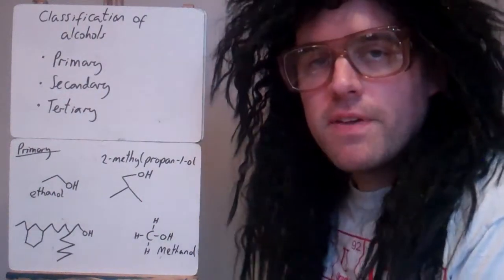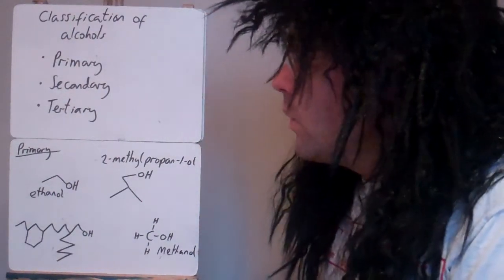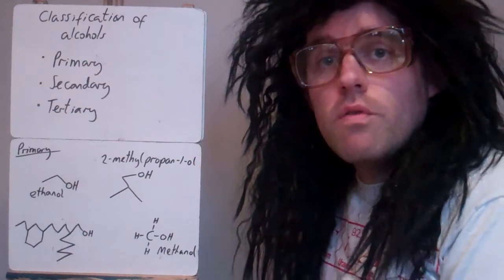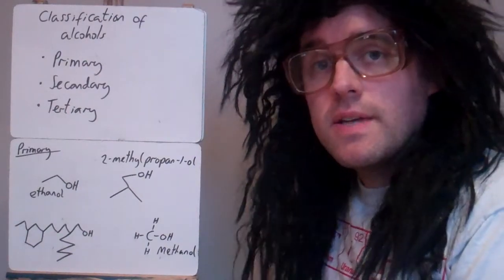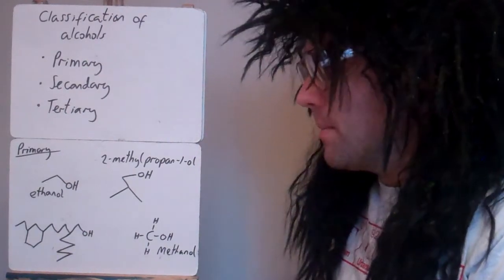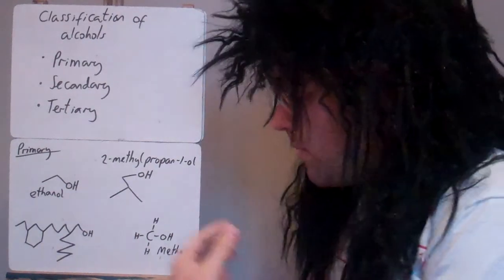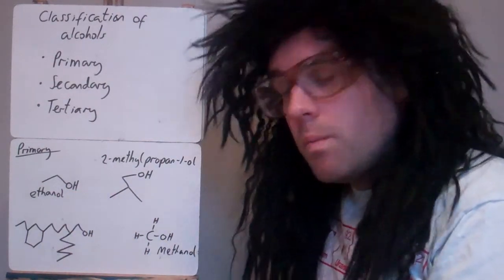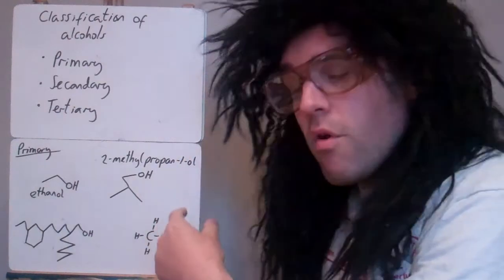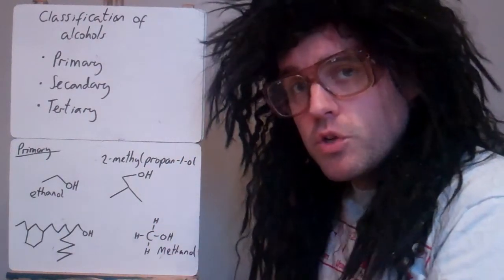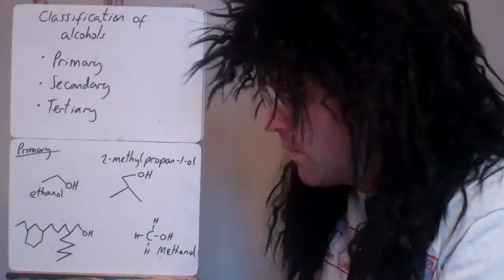In this video we're going to look at the classification of alcohols. We can classify alcohols into three types: primary, secondary, and tertiary. Alcohols must have an OH group to be an alcohol, and whether they're primary, secondary, or tertiary, it depends on the carbon the OH is attached to.